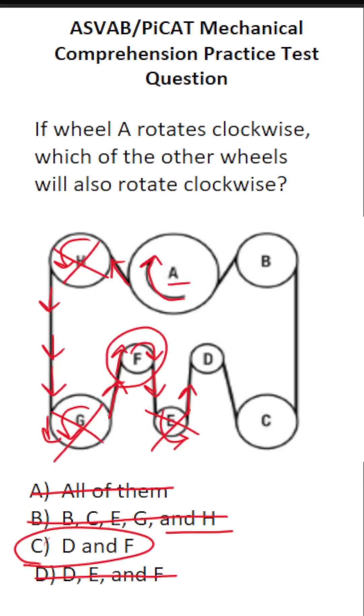let's just confirm that D is spinning in that direction. Again, the belt is moving this way, and that's going to spin wheel D this way. That is the same direction, clockwise, as wheel A. So only F and D spin clockwise like wheel A.